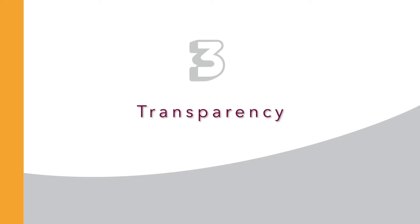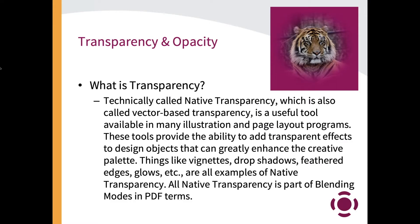Transparency — that evil word we all hear about — can be our best friend or our worst enemy. The key is there is a difference between transparency and opacity. Transparency in PDF terms is technically called native transparency or vector-based transparency. It's a tool that many layout programs use to provide the ability to put special effects around an object — things like vignettes, drop shadows, feathered edges, or glows. Those are all examples of native transparency, and in PDF terms those are all called blending modes.